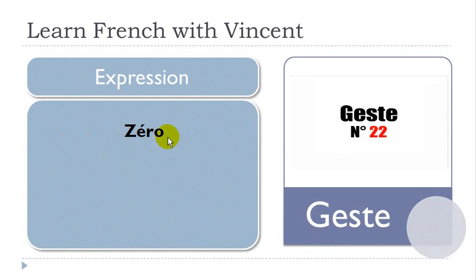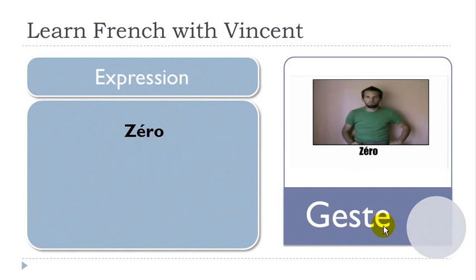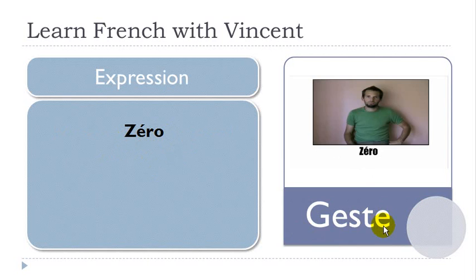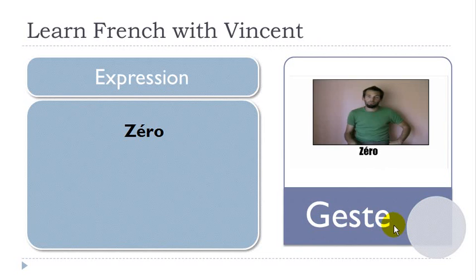Next: ZERO. Well, zero — it's quite clear, it's like in many languages. You are doing zero like that and you want to express that something is clearly quite bad. So zero — look at the head, Laurent is not really happy. You just want to say that maybe a movie or something was really bad. Zero.